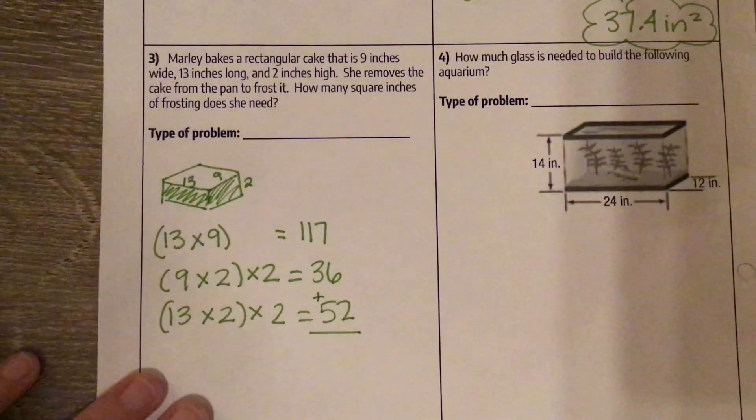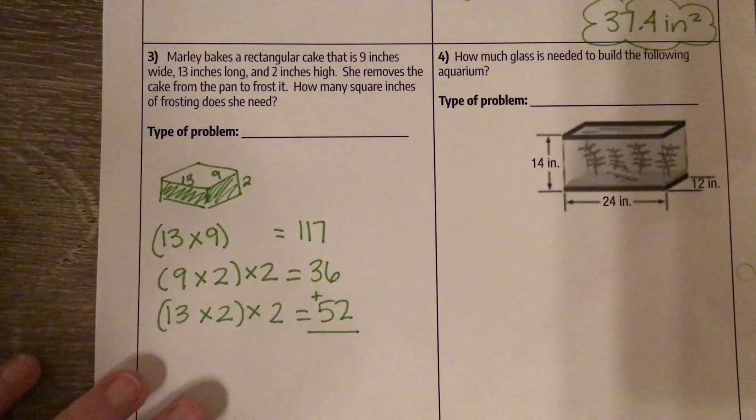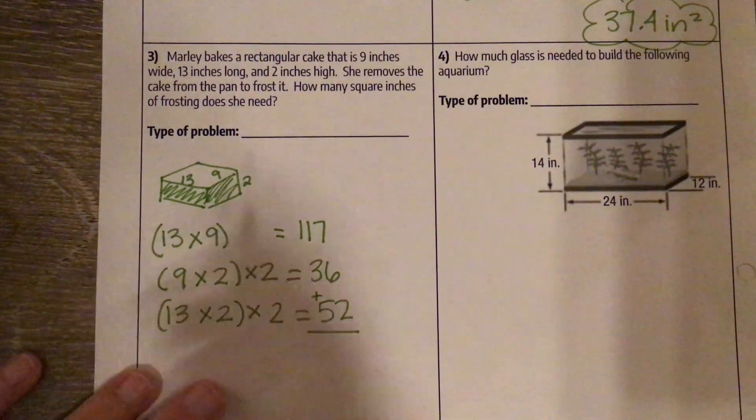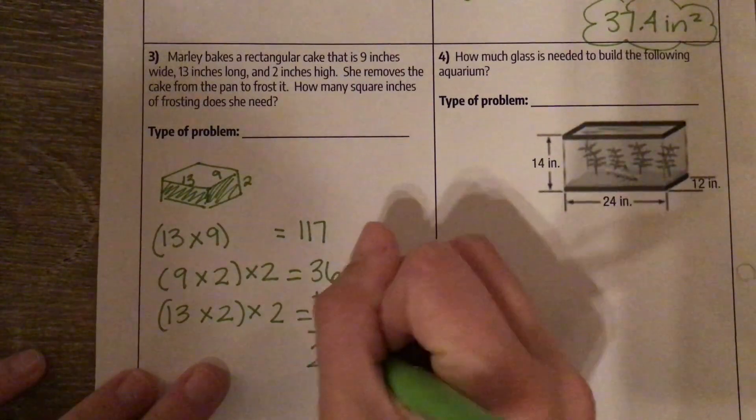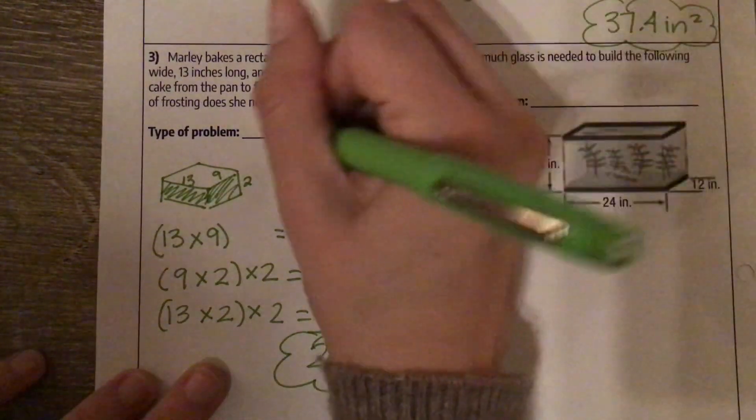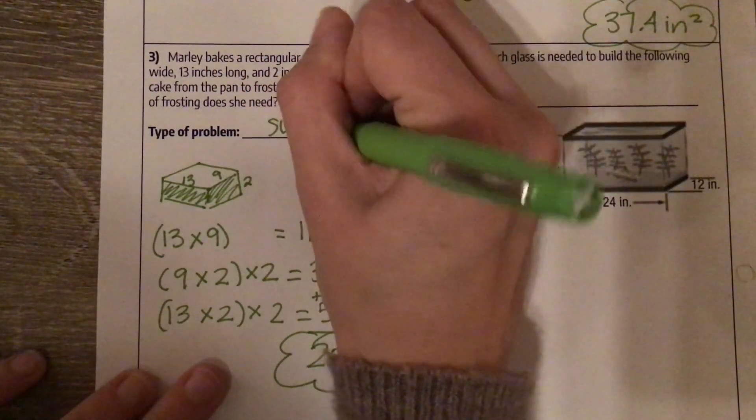So our total surface area of frosting that we need is 52 plus 36 plus 117 is 205 square inches of frosting. And we forgot to put here, this was a surface area problem.